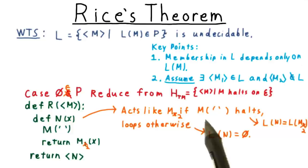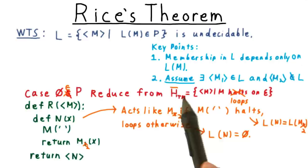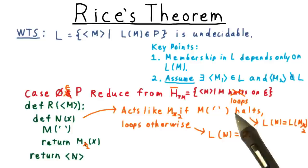...but we need to reduce from the complement of the halting problem. That is, from the set of descriptions of Turing machines that loop on the empty input. Otherwise, we would end up accepting when we wanted to not accept, and vice versa.